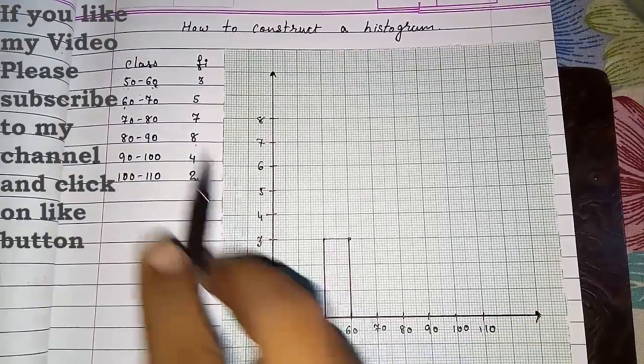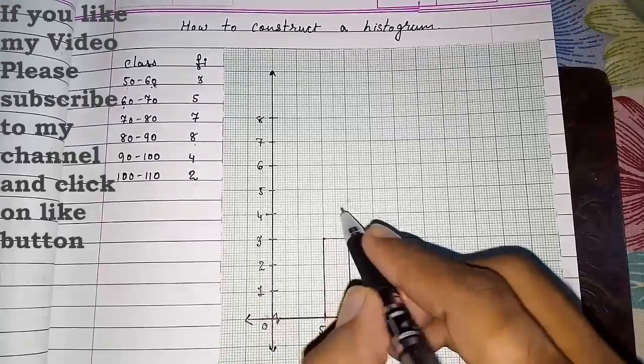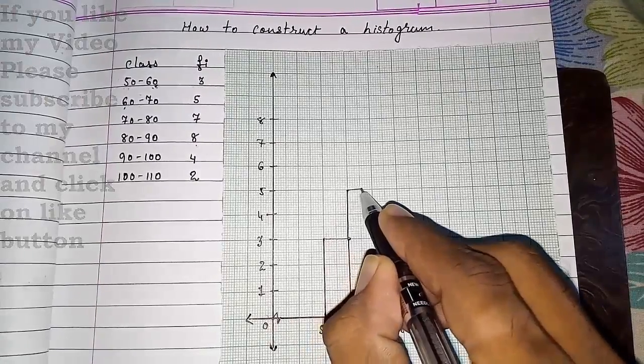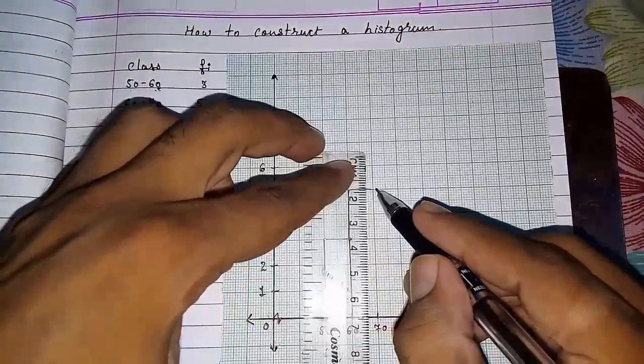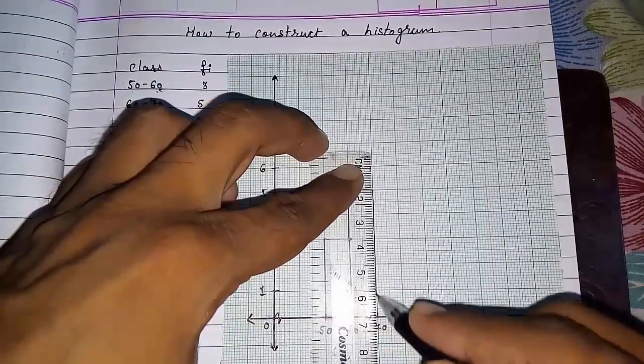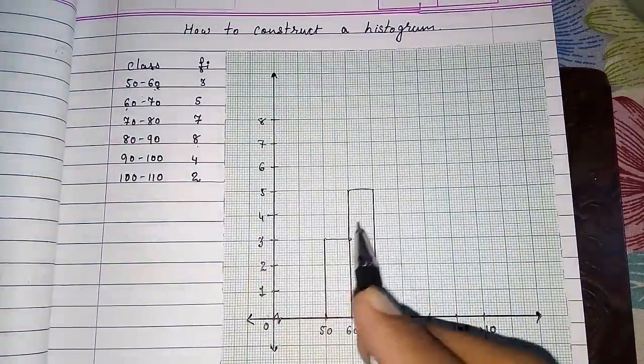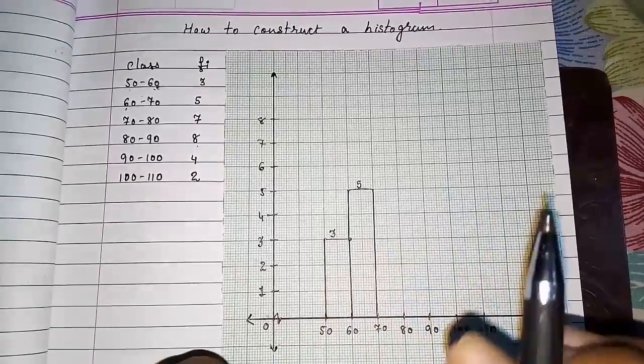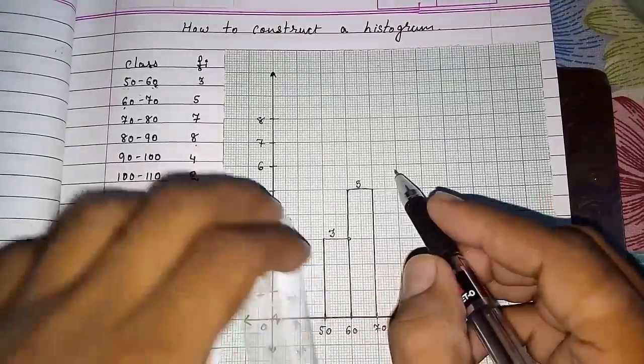Now from 60 to 70 they had given us frequency 5. So we have to increase it. I am going directly, but you have to use scale. This is 5. If you want to write the frequency above it, you can write down, but it's not compulsory.